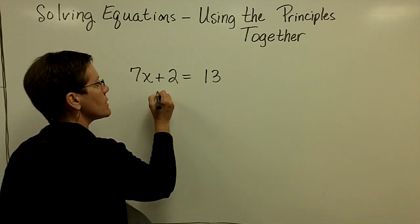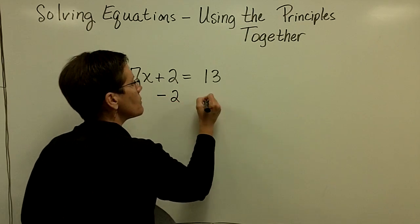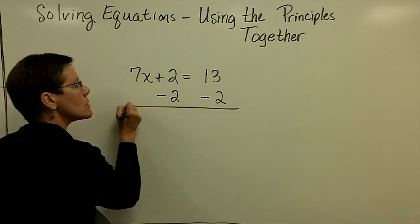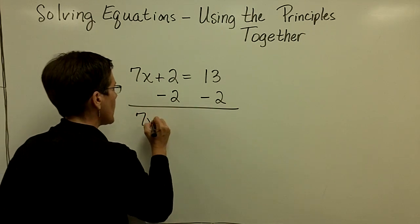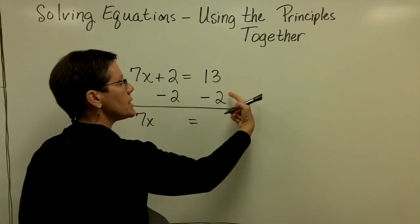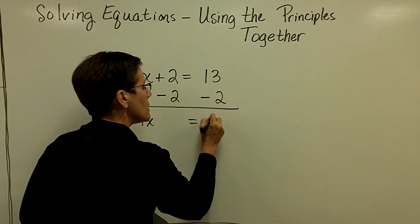I'm trying to isolate the variable. I work in a vertical approach, so I'm going to subtract 2 from both sides of the equation. The 7x will be all alone, and 13 minus 2 is 11.